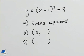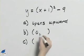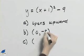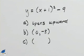The second part is asking us to find the y intercept. The y intercept is the point where the x coordinate is 0. So if the x coordinate is 0 we have 1 squared minus 9 which ends up being negative 8. So the y intercept is 0, negative 8.